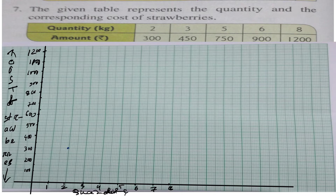Now, opposite to 3 kg is 450. So we need to mark 450 opposite to 3 kg. This is 400, and then 50 more — why 50? Because 10 small squares equal 100, so 5 small squares equal 50. Therefore, opposite to 3 kg we mark 450.